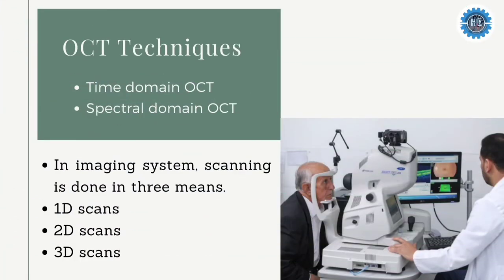The Optical Coherence Tomography technique can be applied by two methods: the first is Time Domain OCT and the second is Spectral Domain OCT. In an imaging system, there are three means for scanning — one is to scan the object in depth and the other two are used to scan transversally. 1D scans are labeled as A-scans, while 2D scans are labeled as B-scans.